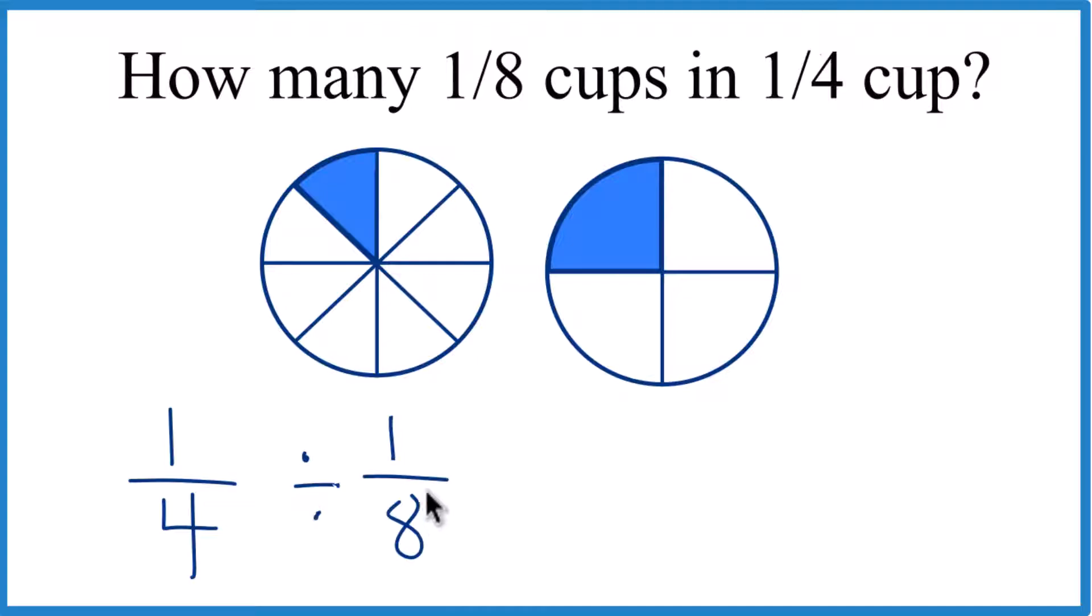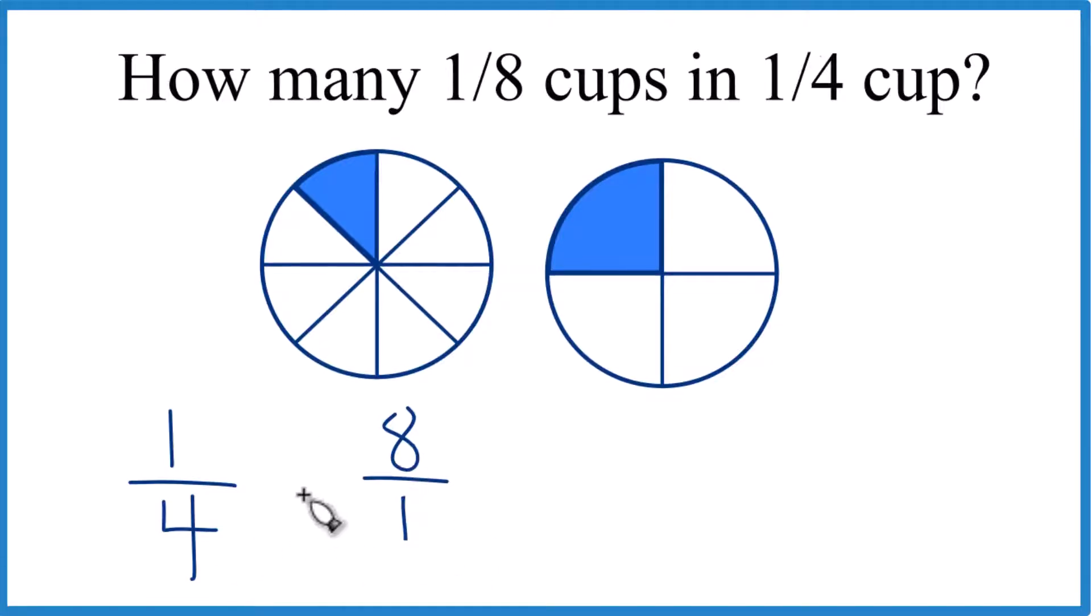we take the reciprocal of one-eighth. We move the one here and the eight up to the top. The reciprocal for one-eighth is eight over one. But now instead of division, we just do multiplication.